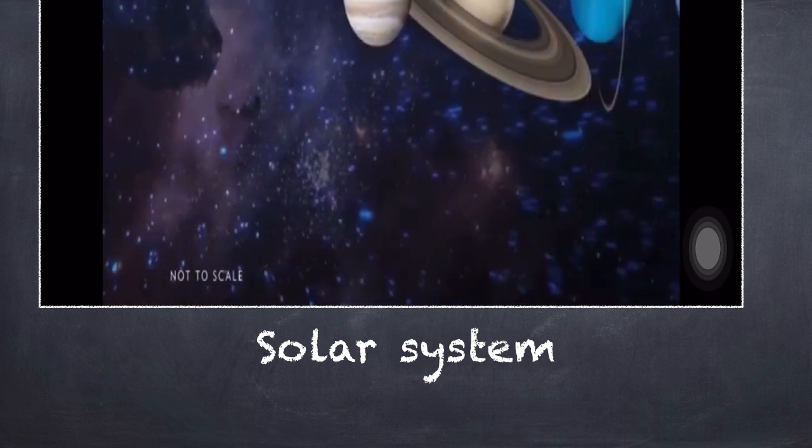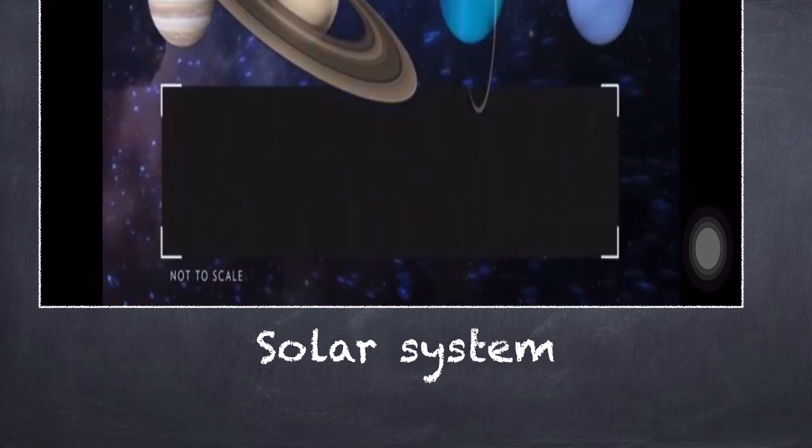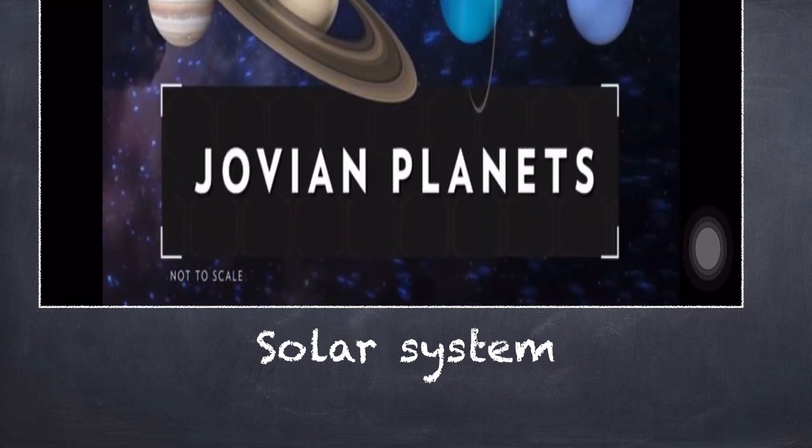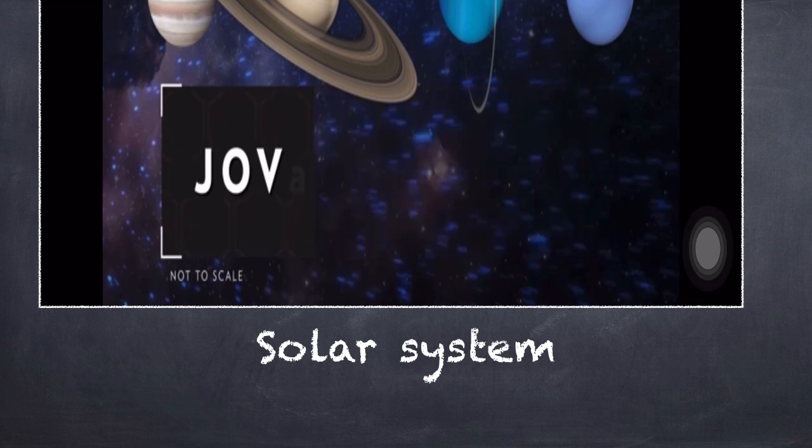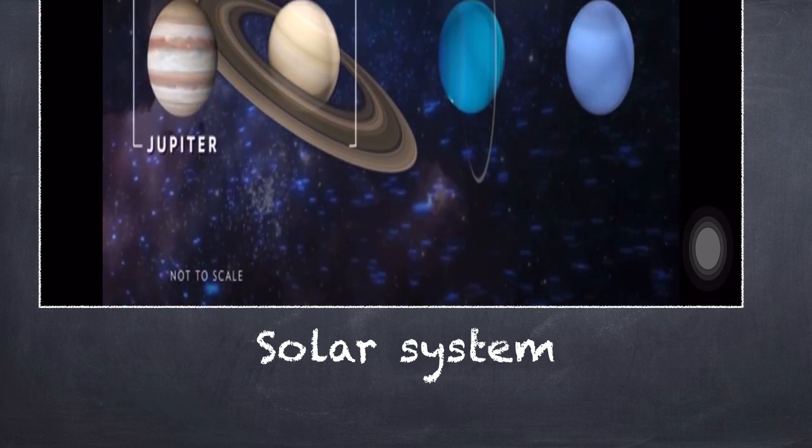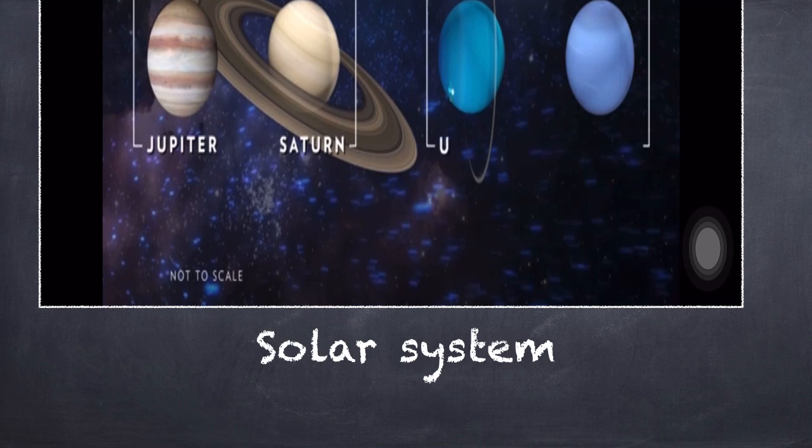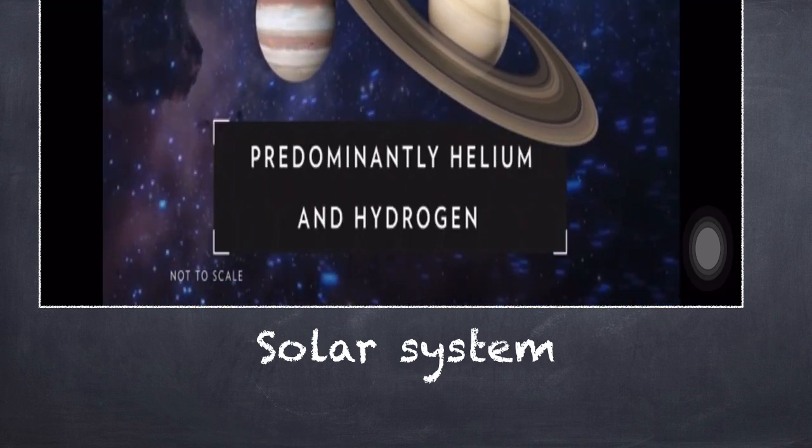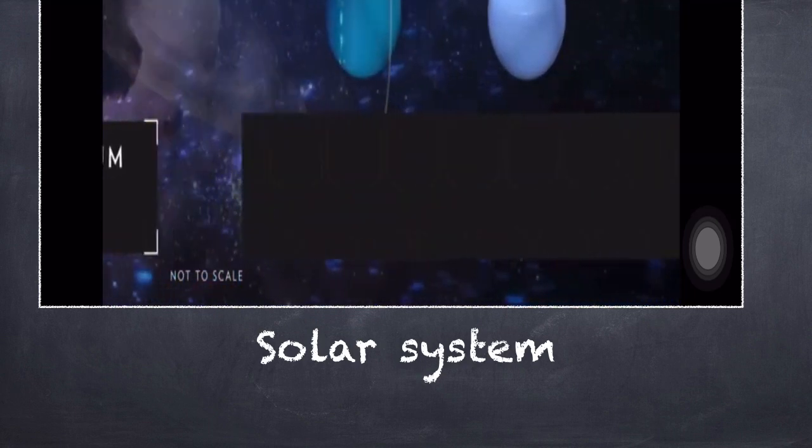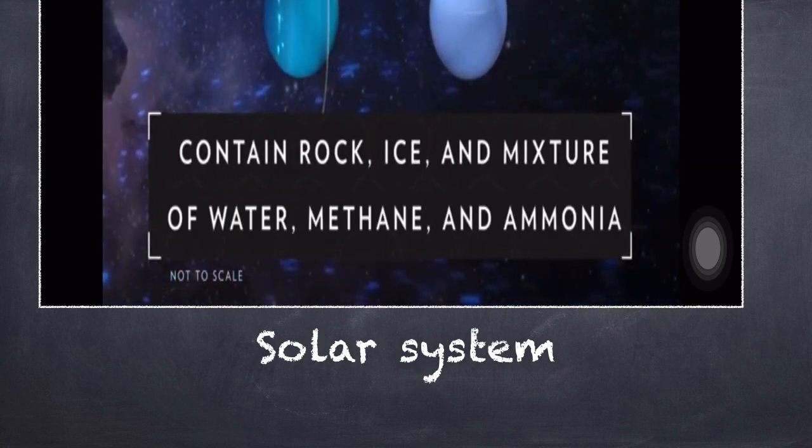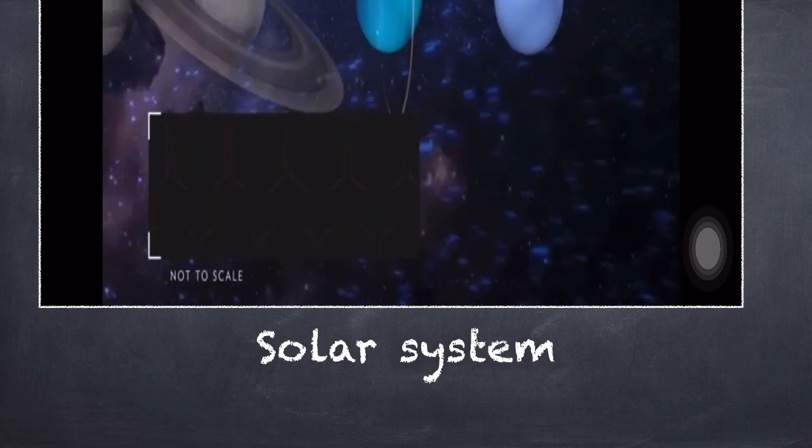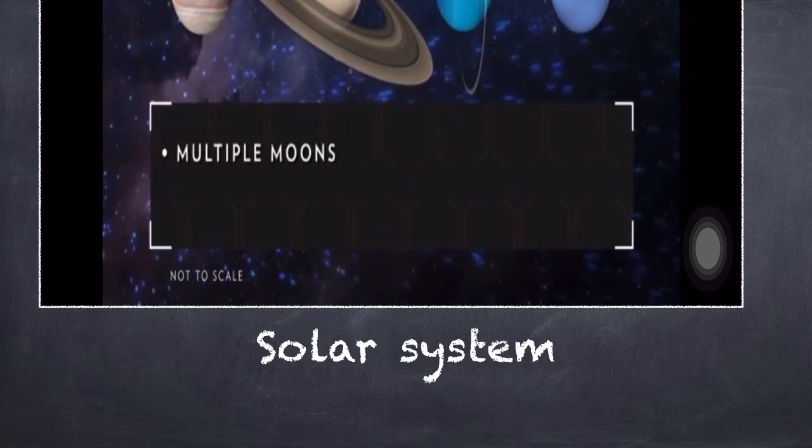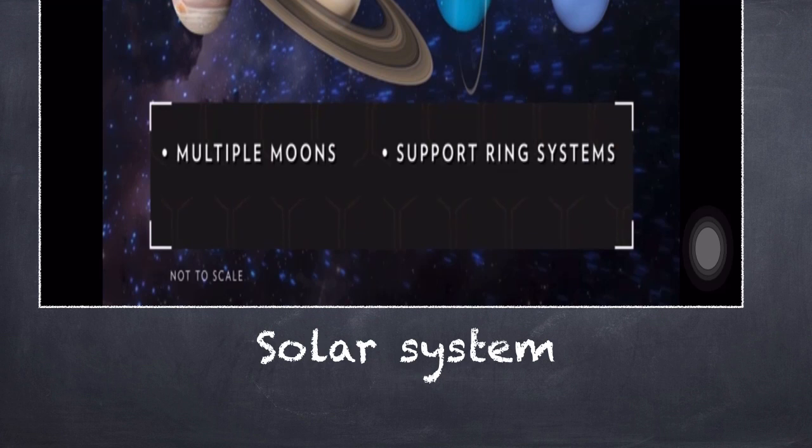Beyond the four terrestrial planets of the inner solar system lie the Jovian planets of the outer solar system. The Jovian planets include gas giants Jupiter and Saturn, and ice giants Uranus and Neptune. The gas giants are predominantly made of helium and hydrogen, and the ice giants also contain rock, ice, and a liquid mixture of water, methane, and ammonia. All four Jovian planets have multiple moons, sport ring systems, have no solid surface, and are immense.